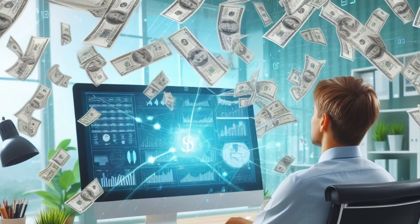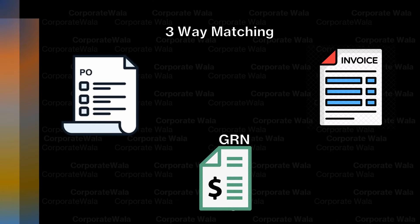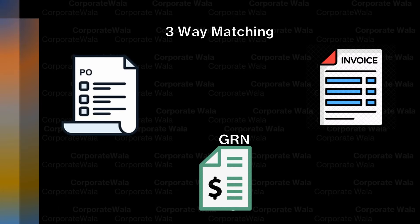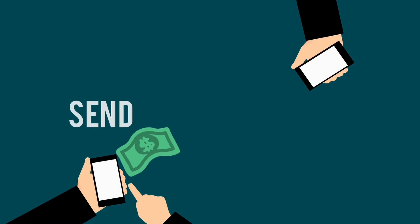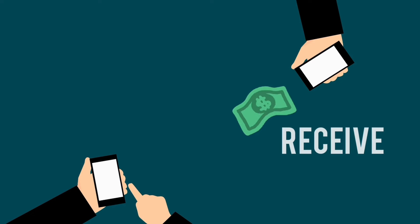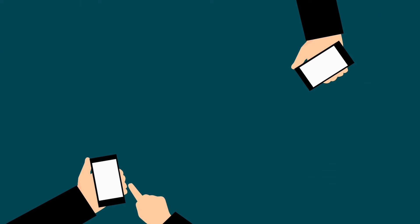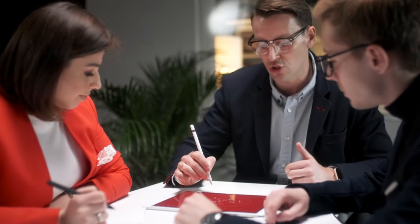The Accounts Payable team verifies the invoice against the purchase order and the Goods Receipt Note to ensure accuracy, which is also known as two-way or three-way matching. This is done to ensure the accuracy of the invoice before making payment. Once the two-way or three-way matching process is complete, the invoice goes through an approval process where it is reviewed and authorized for payment.